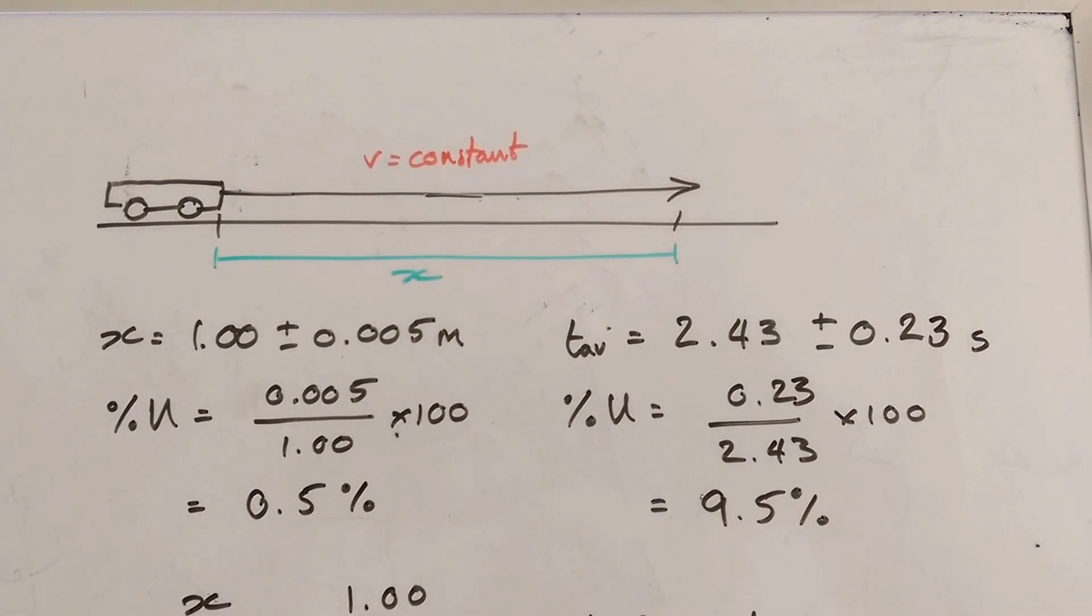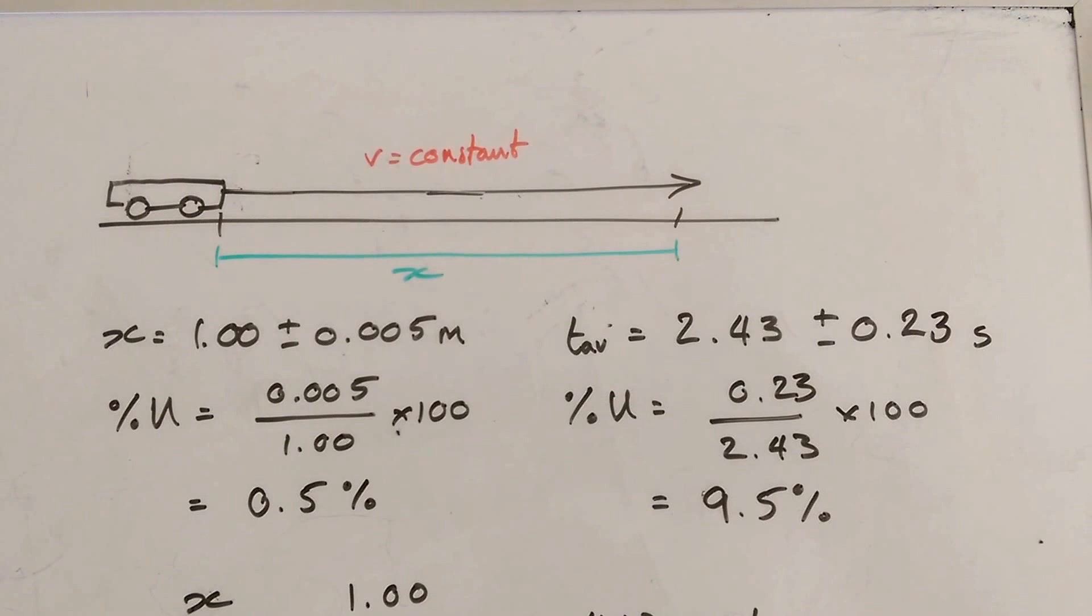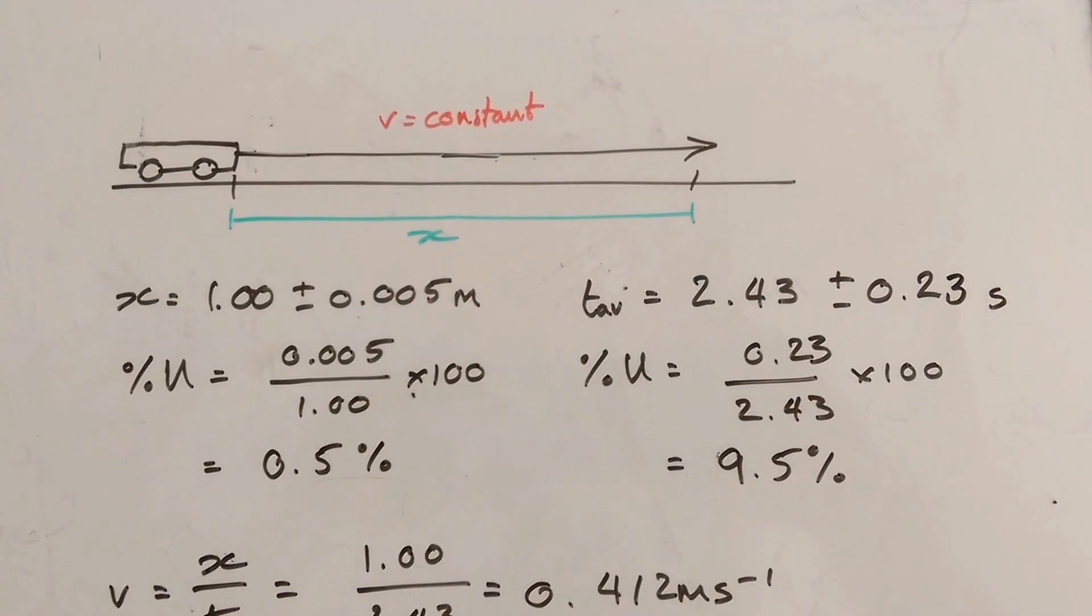And I'm going to say that's accurate to half a scale division, so half a centimetre. So it's plus or minus 0.005. The percentage error is therefore 0.5%. You can see I've calculated that there.